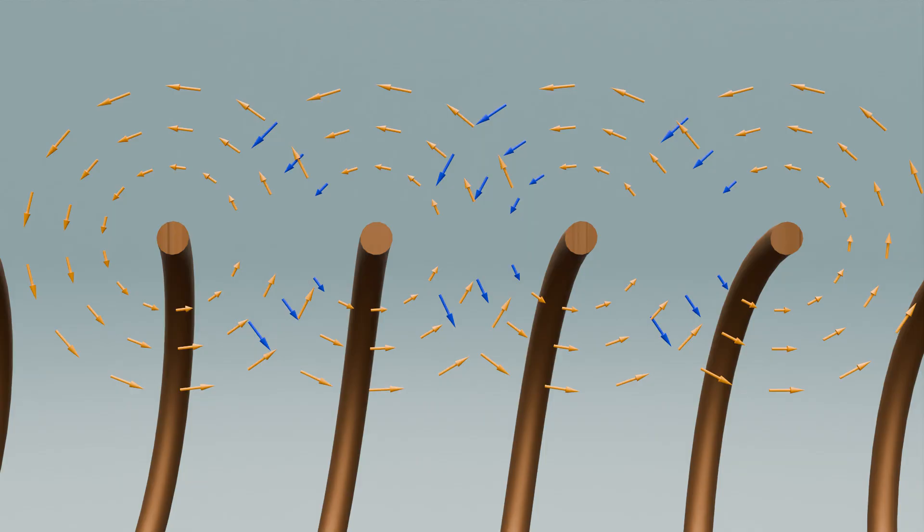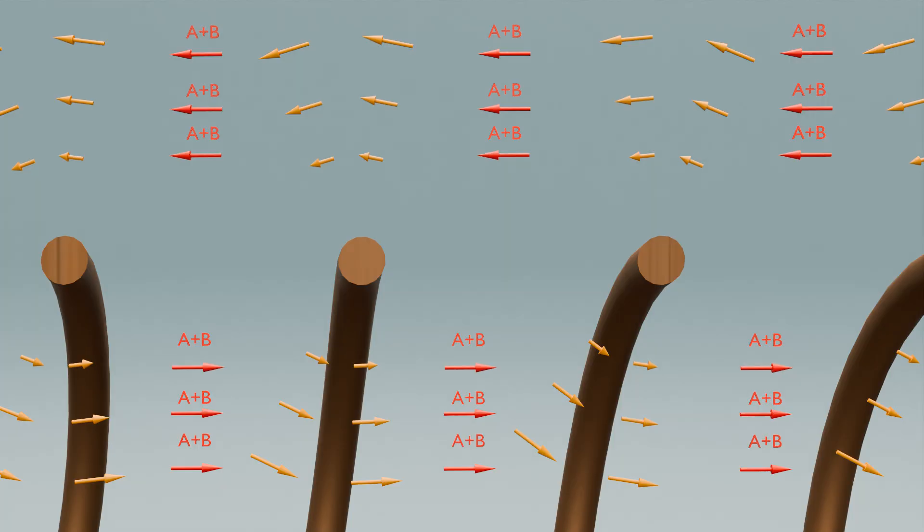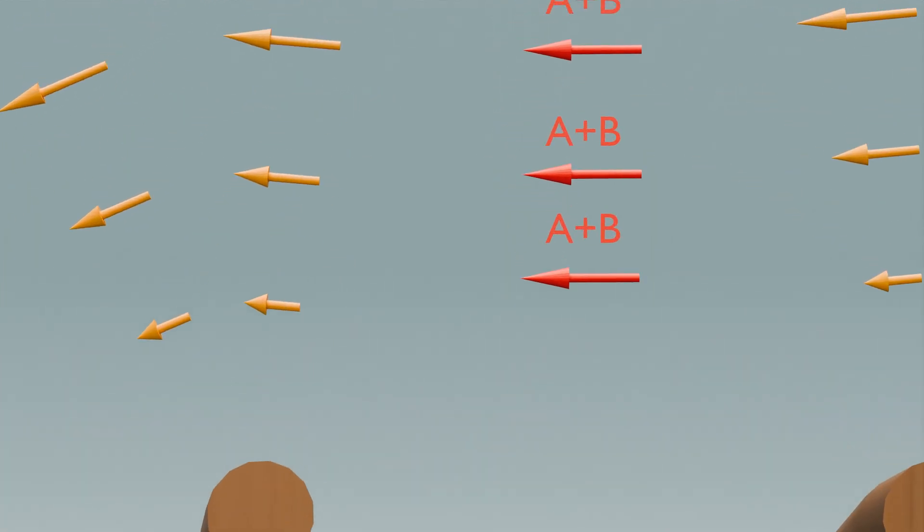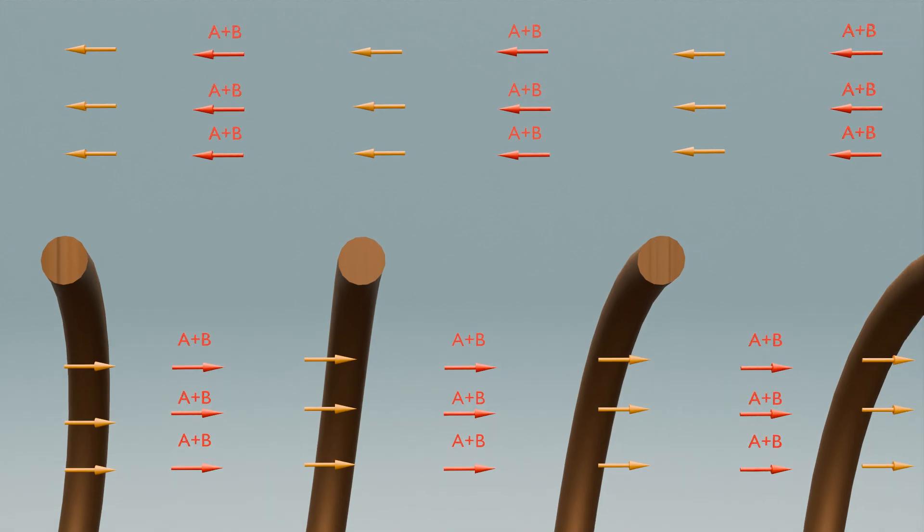According to vector addition, the fields combine to form a resultant field. This means the individual magnetic fields add up at each point in space. When neighboring turns generate their magnetic fields, the fields interact.